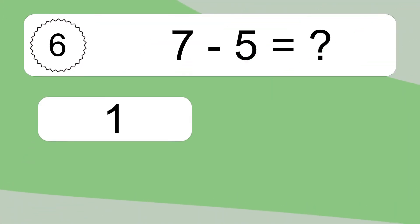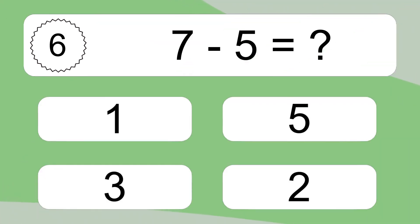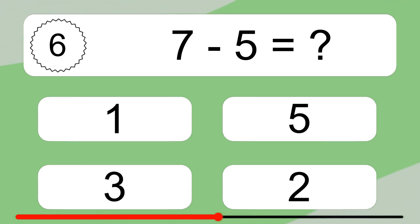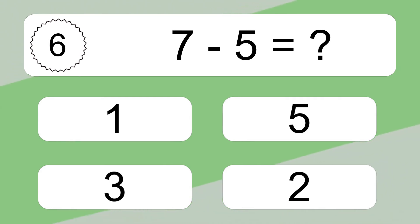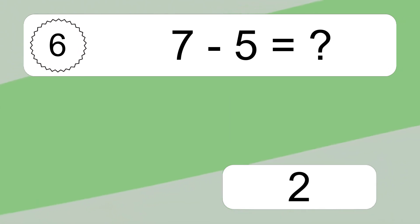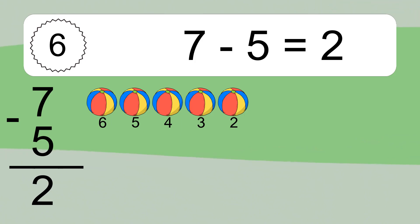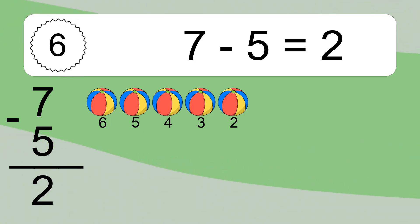7 minus 5 equals what? 7 minus 5 equals 2. Let's count it: 6, 5, 4, 3, 2.